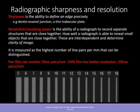Sharpness is the ability to define an edge precisely — for example, the ability to see the dentino-enamel junction or a thin trabecular plate clearly on the final radiographic image. Resolution, or resolving power, is the ability of a radiograph to record separate structures that are close together — how well a radiograph can reveal small objects in proximity. These are independent properties that together determine the clarity of the image.